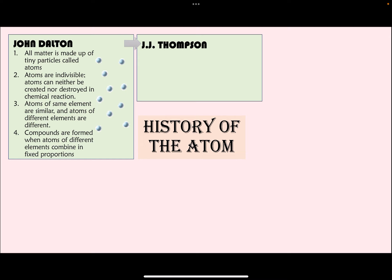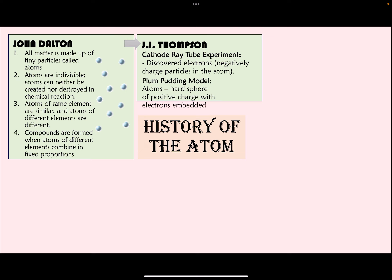Thomson conducted the cathode ray tube experiment, which led to the discovery of electrons — the negatively charged particles in the atom. Based on that, Thomson gave us what we know as the plum pudding model. In this model, atoms have negatively charged particles embedded in a positive surface — electrons embedded in the positively charged pudding of the atom.